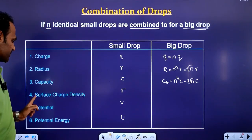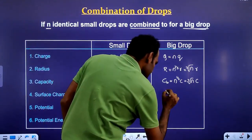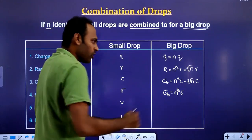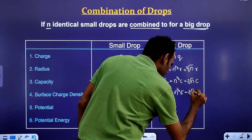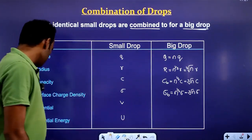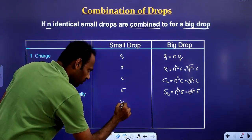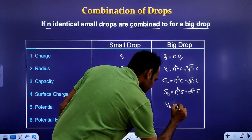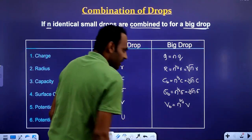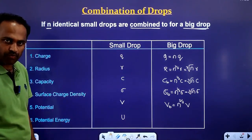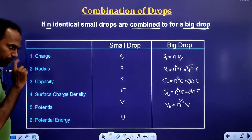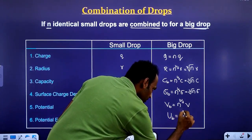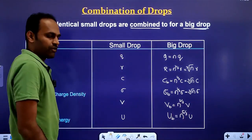Next, surface charge density of the big drop will be equal to N raised to 1/3 times the surface charge density of the small drop, or cube root of N times sigma. The potential of the big drop is given as V_B = N raised to 2/3 times V. The potential energy of the big drop will be equal to N raised to 5/3 times U.